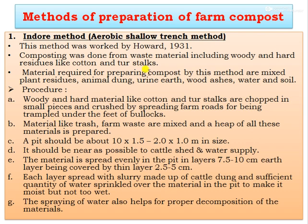The first method of compost preparation is the Indore method, which is an aerobic shallow trench method. This method was worked out by Howard in 1931, and composting was done from waste material like woody and hard residues such as cotton and tur stalks. The materials required for preparation of compost by this method are mixed plant residues, animal dung, urine earth, wood ashes, water, and soil.